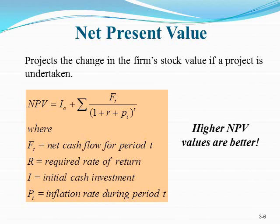Next we move to the Net Present Value (NPV), which is one of the most popular financial decision-making approaches in project selection. NPV measures changes in the firm's value if a project is undertaken. The formula is: NPV = I₀ + Σ (Net Cash Flow for period t) / (1 + r + p)^t, where t is the time period, r is the required rate of return, and p is the inflation rate. A positive NPV indicates the firm is making money and its value is rising.